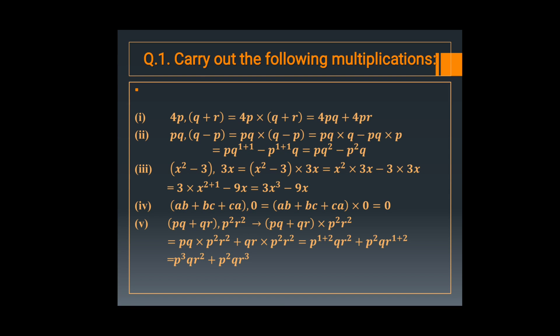Now in the fifth question, PQ plus QR multiplied by P square R square. P square R square multiplied by PQ, then P square R square multiplied by QR. In the first term, power of P is 1 and 2, so add 1 plus 2. In the second term, power of R is 1 and 2, so 1 plus 2. The result is P cube QR square plus P square QR cube.